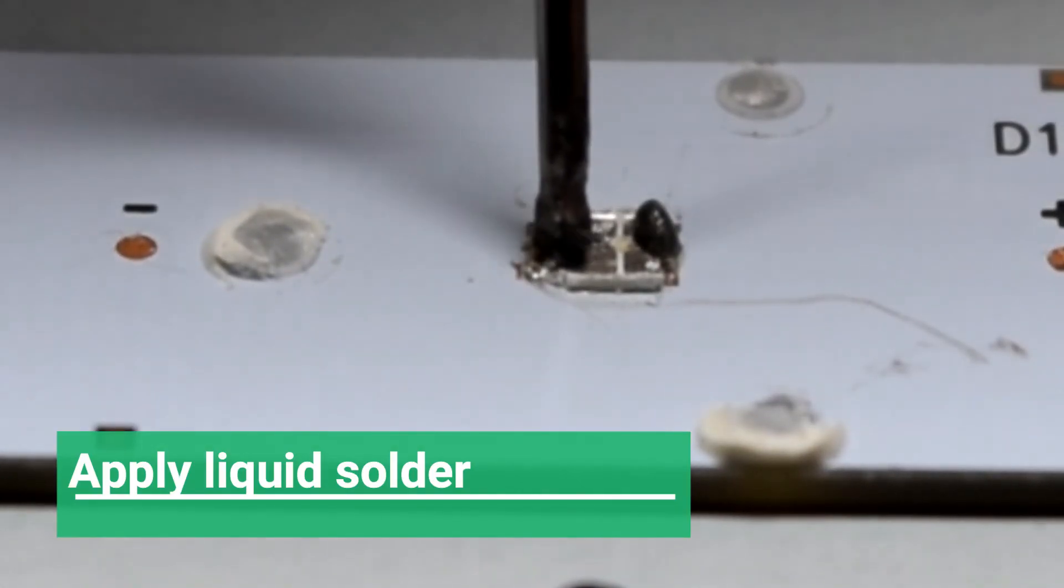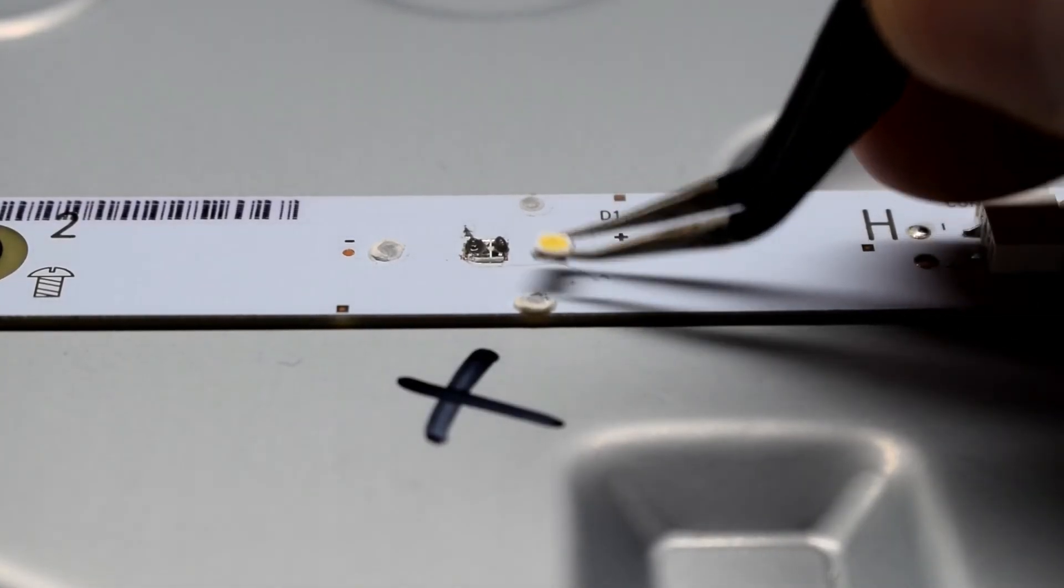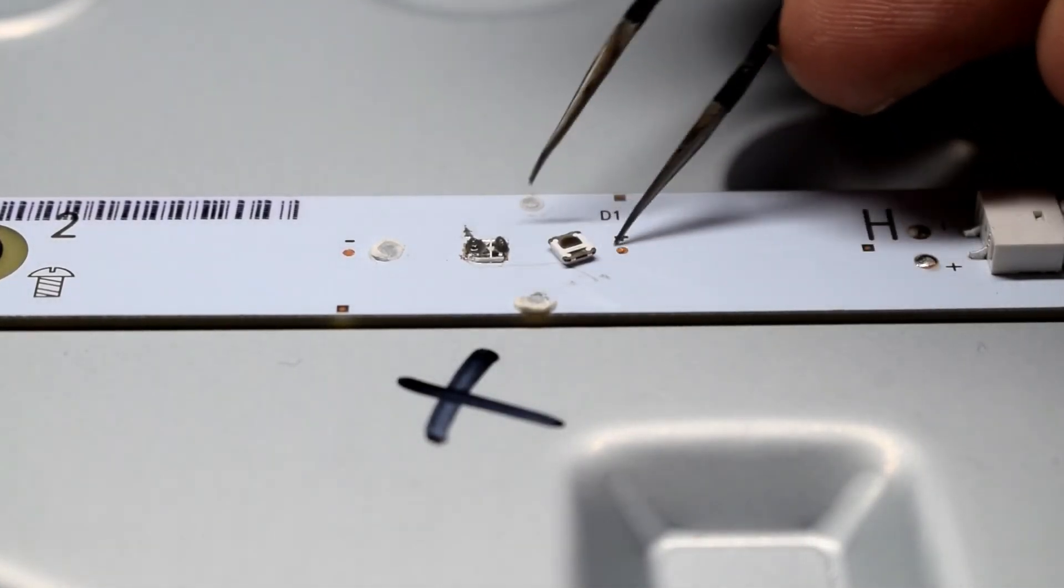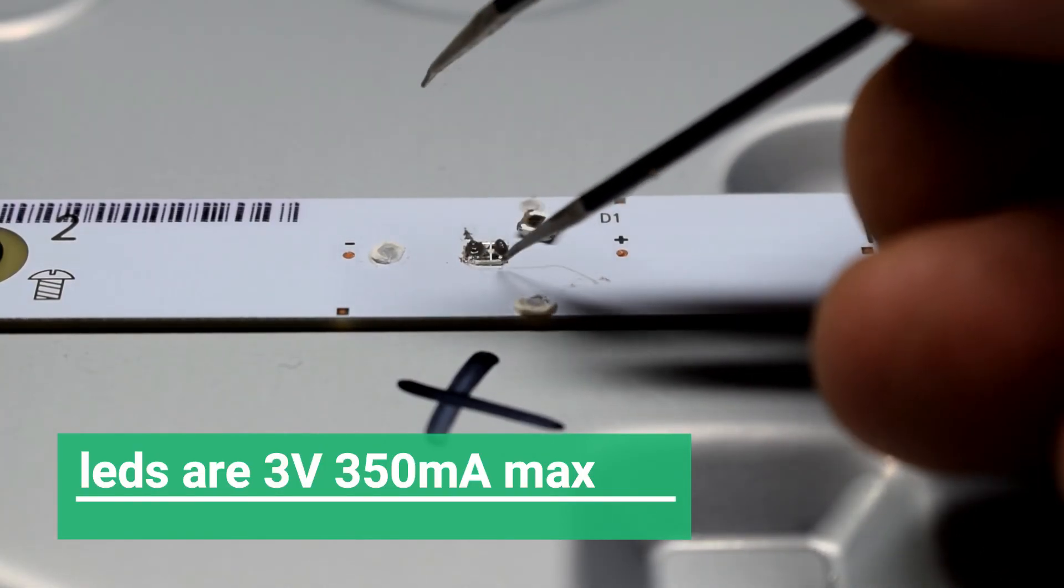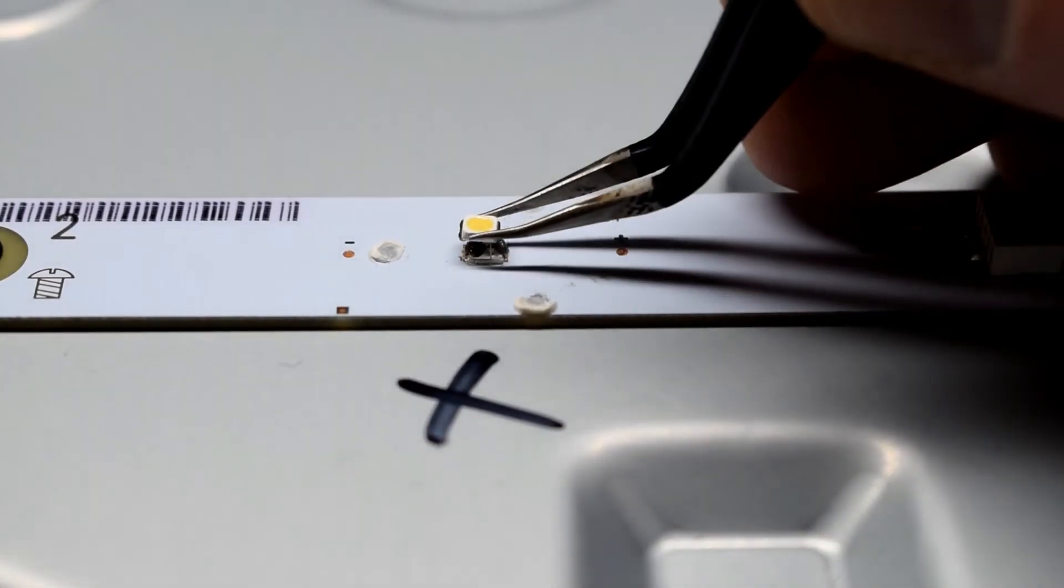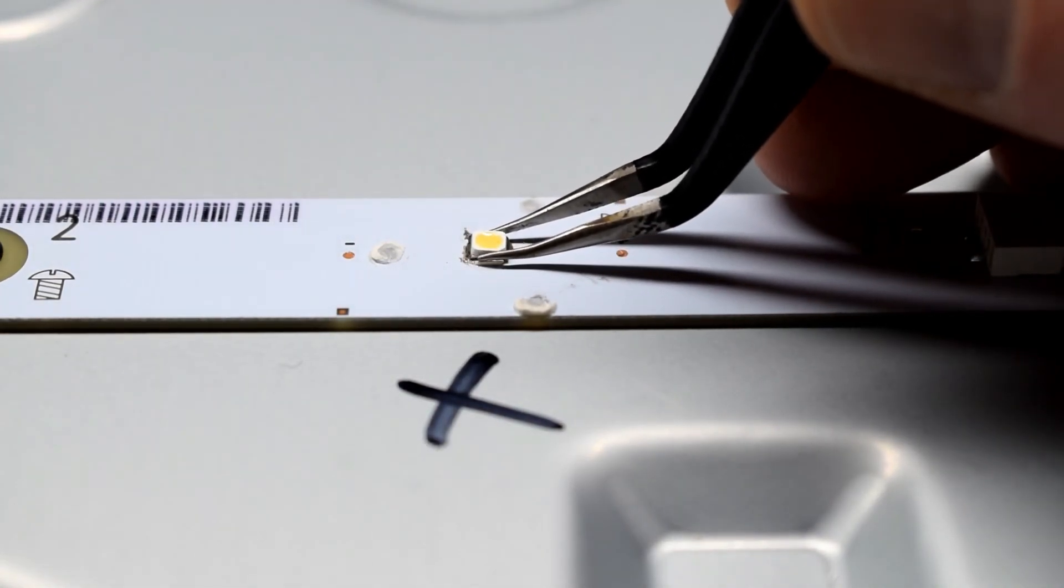I'm applying liquid solder. And this is my repair LED. It's three millimeters by three millimeters with a big pad and a small pad. We'll put it on.